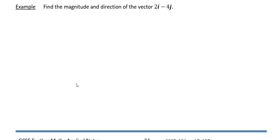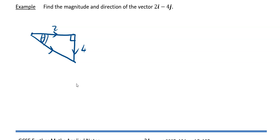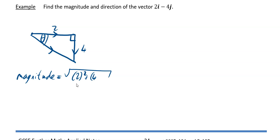To find the magnitude and direction of the vector 2i minus 4j, it's a good idea to draw a diagram. 2i means 2 to the right, and minus 4j means 4 downwards. The magnitude is the hypotenuse of the right-angle triangle. By Pythagoras, it is the square root of 2 squared plus 4 squared, which is the square root of 4 plus 16, giving the square root of 20, which simplifies to 2 root 5 units.